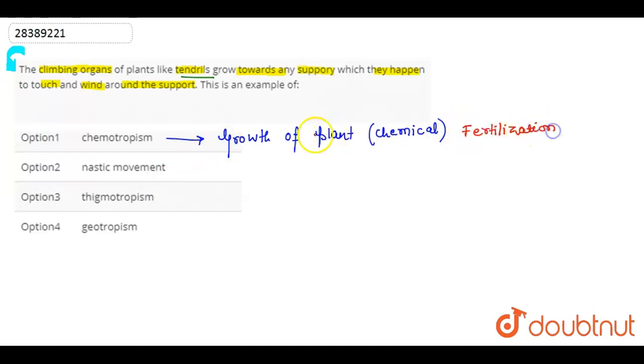This is why this option is wrong with regard to the climbing organs that are tendrils. The second option is Nastic movements. Nastic movements are the movements which are shown by the plant but not included and associated with growth.